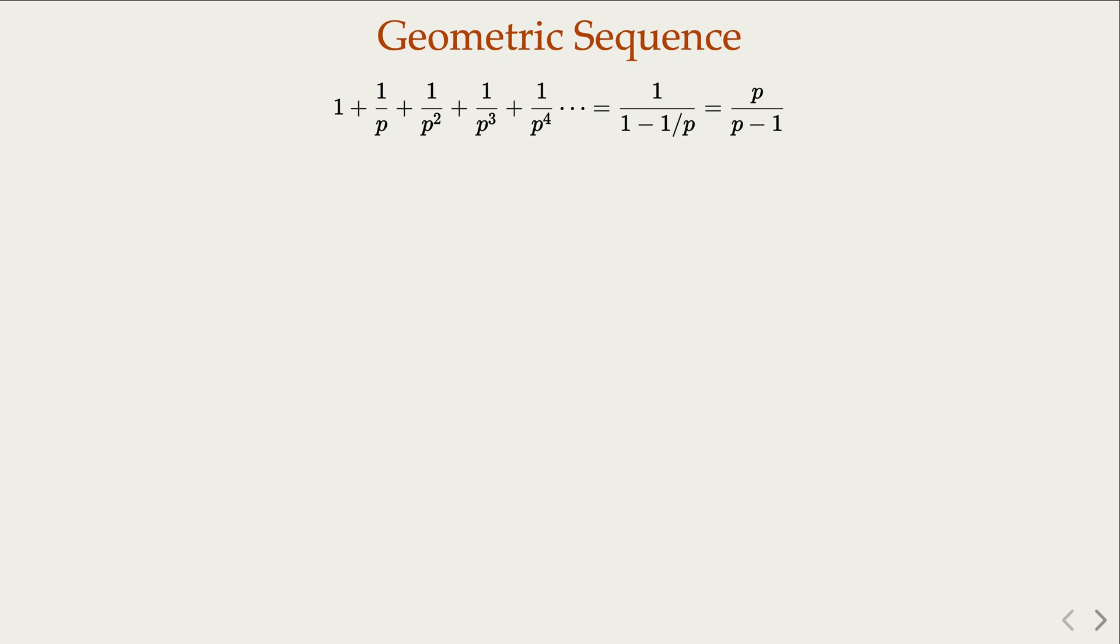We use the fact that this is actually a convergent sequence, and the summation adds up to 1 over 1 minus the ratio, which is 1 over p. Of course, you can reduce that to p over p minus 1, which is a finite number. That's important to keep in mind.